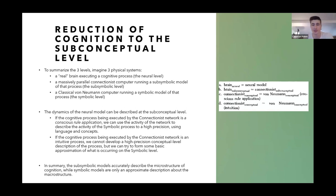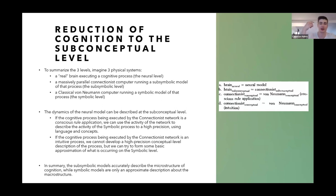On the other hand, if the process is intuitive — something like a motor program or sport knowledge — there is no way to develop a high-precision conceptual level description of this process. We can try to form a very basic approximation, but it'll be very low precision compared to conscious rule application. In summary, sub-symbolic models accurately describe the microstructure of cognition, while symbolic models give only an approximate description of the macrostructure of cognition.